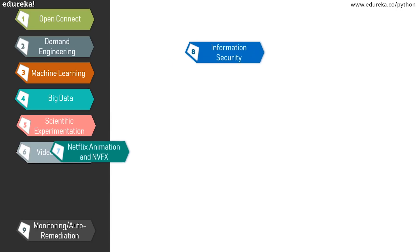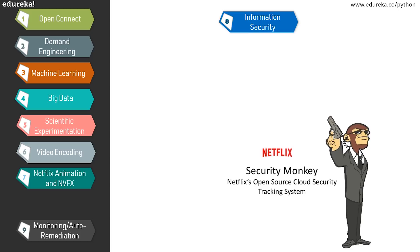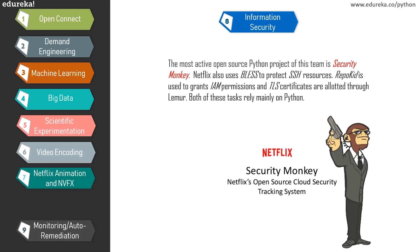Netflix uses Python for information security, including auto-remediation, security automation, and risk classifications. The most active open source project of this team is Security Monkey. Netflix also uses BLESS, which stands for Bastion's Lambda Ephemeral SSH Service, to protect secure shell resources. Repokid is used to grant IAM permissions, and TLS certificates are allotted through Lemur — both of these tasks rely mainly on Python.